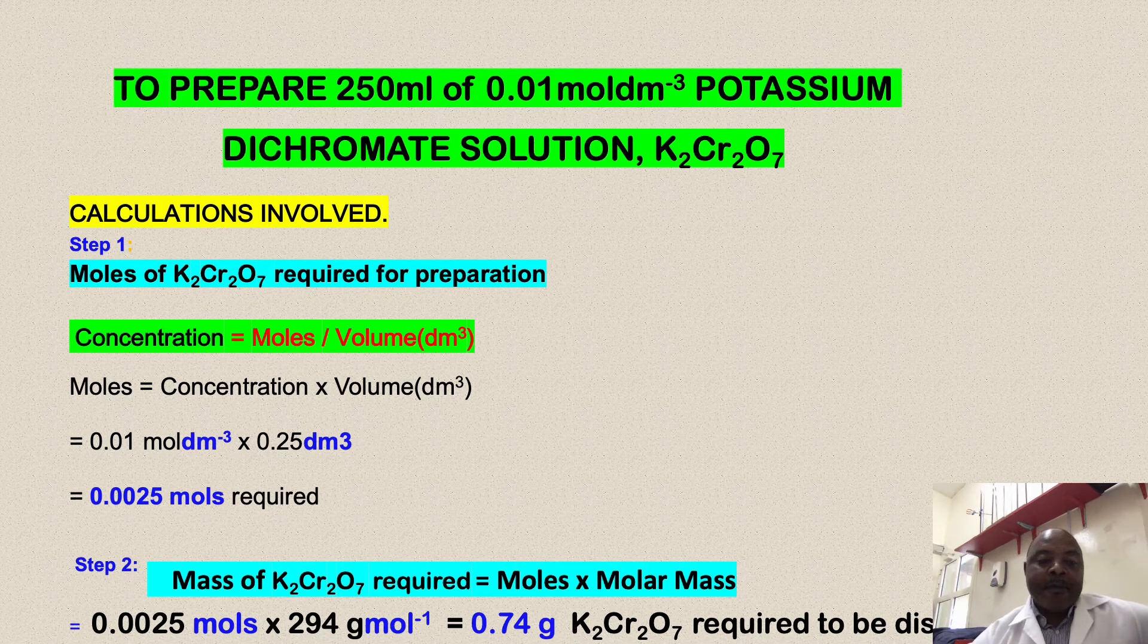If we make mass the subject, it will be equal to moles times the molecular mass or the molar mass. Again, substituting our values, we will have 0.0025 moles times 294 g/mol, which gives us 0.74 g of potassium dichromate that is required to be dissolved.